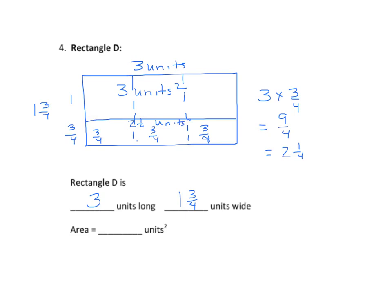Now we find the sum of the two. These are like partial products. 3 units squared plus 2 and 1⁄4 units squared equals 5 and 1⁄4 units squared. So now we can answer: area equals 5 and 1⁄4 units squared.